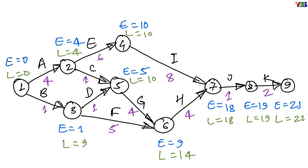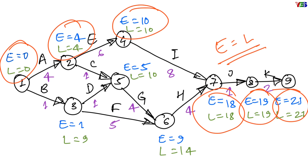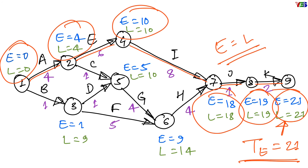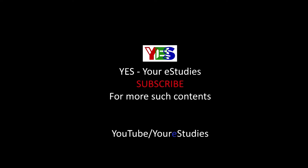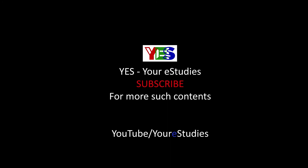Now we can make an observation that at events 1, 2, 4, 7, 8, and 9, the values of L and E are equal, and the significance of this is that path 1-2-4-7-8-9 is the critical path. The value of E and L at the end event, which is 9 in this example, will be our expected project completion time — that means 21 hours is the expected project completion time. By this, we have completed our study for computation of E and L in network diagrams. This is Harish Kumar Patel and you are watching this tutorial on your e-studies. Stay subscribed for more such content. Thank you.